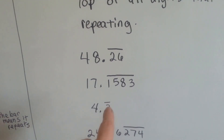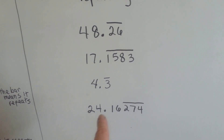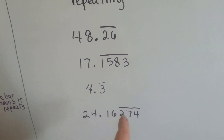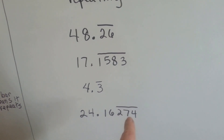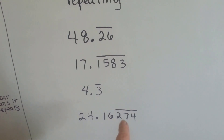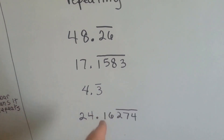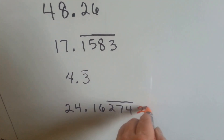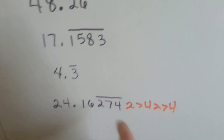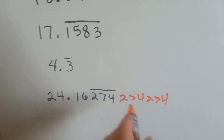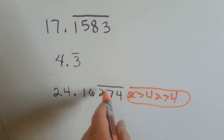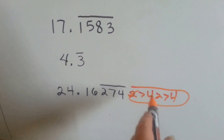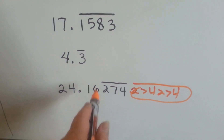The 3 would keep repeating, so we just put it over the 3. But what if we had one where we had 24 and when we got to the 1,600th it was okay, but then the 274 repeated but this part didn't? Then just put it over the 274. You wouldn't put it over that if that wasn't repeating. So if this kept repeating, we would just put the bar over the 274 to let everyone know that it's going to go 274, 274, even though it's got a 1, 6 here.